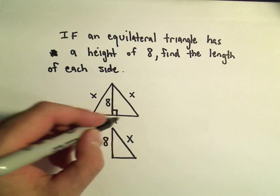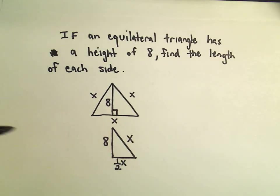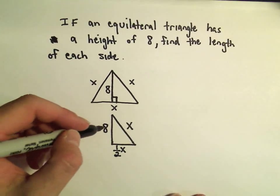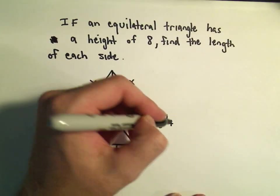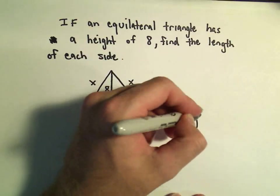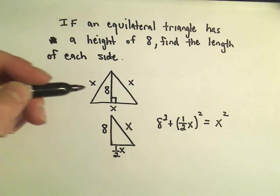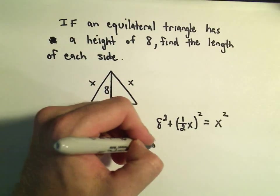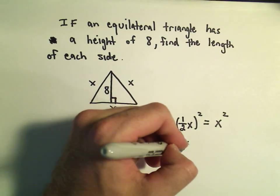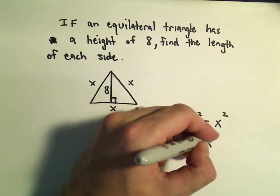I should since the whole length is x, half of it would be x over 2 or simply 1 half x. So using the Pythagorean theorem, it says that 8 squared plus 1 half x squared, that's going to have to equal the other side, which is just x squared. So 8 times 8 is 64. 1 half x times 1 half x will give us 1 fourth x squared. We still have our x squared on the right side.